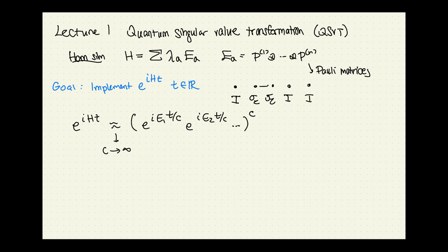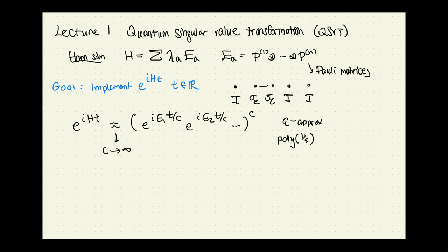The issue is there are inherent limitations if you apply this directly. Naively, if you want an epsilon approximation, you might need C to be as large as poly(1/ε), which ruins your gate complexity. Over a series of works, people eventually got the optimal time complexity, and the approach that succeeded was QSVT.